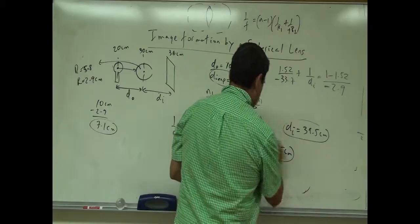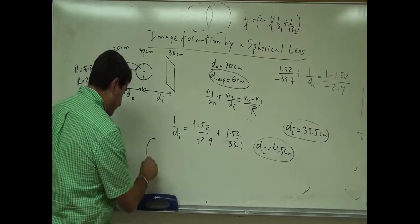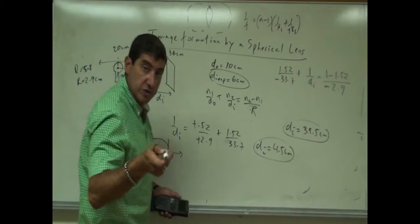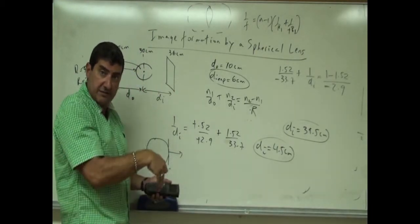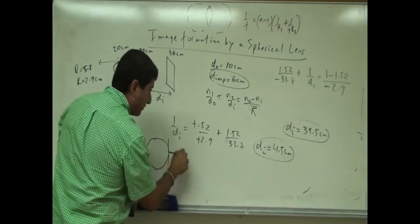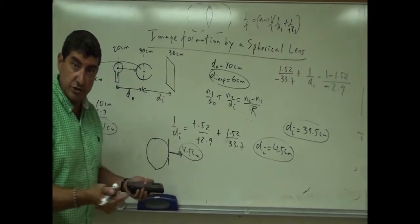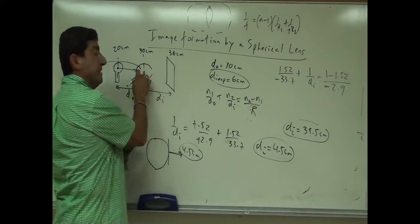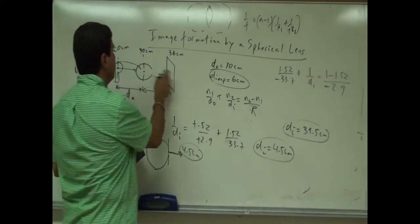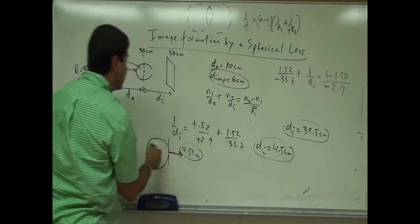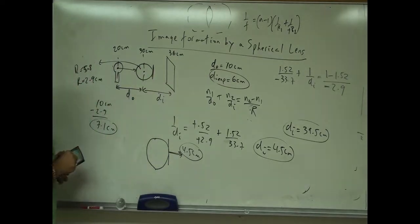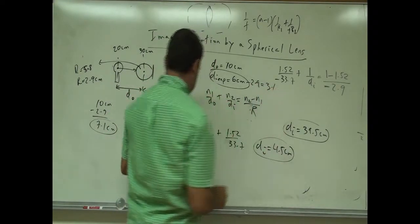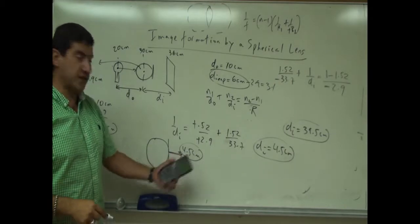The result is DI = 4.5 centimeters from the back side of the lens — a real image. My experimental result was 6 centimeters from the center of the sphere. Subtracting 2.9 gives 3.1 centimeters from the back side. So I'm pretty close to the expected 4.5 centimeters. I was holding the sphere by hand and estimating the screen position, yet still got a good answer.